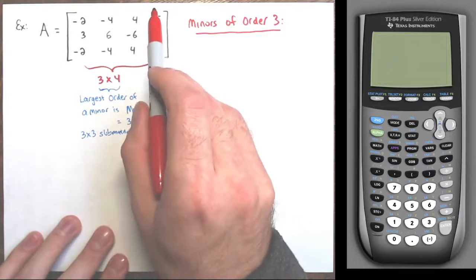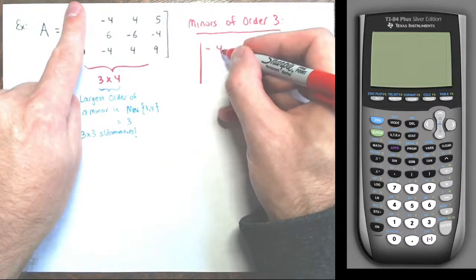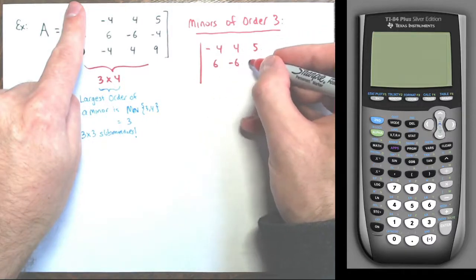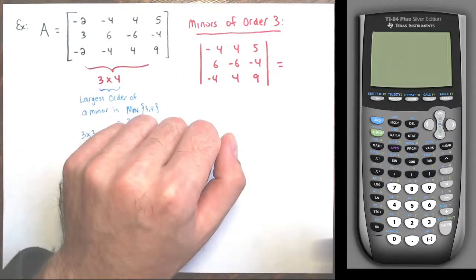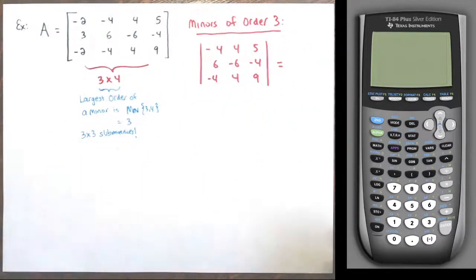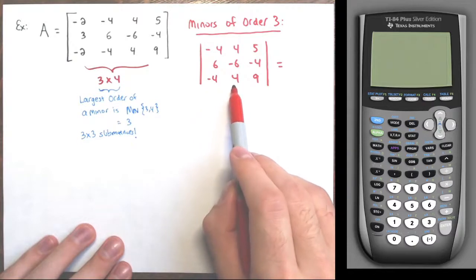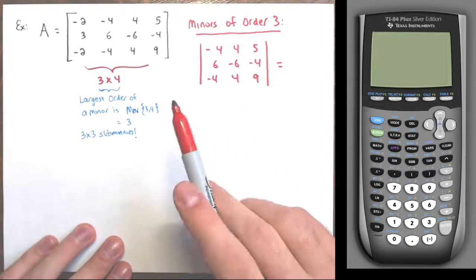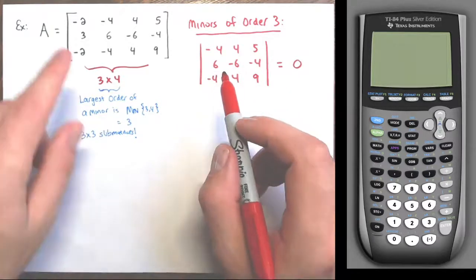Removing the first column gives this three by three submatrix: negative four, four, five; six, negative six, negative four; negative four, four, nine. You could do cofactor expansion or the copy-the-first-two-columns diagonal method — but notice the first column and second column are scalar multiples: multiply the first column by negative one and you get the second column. When columns or rows are scalar multiples, the determinant is zero. So that submatrix has determinant zero.